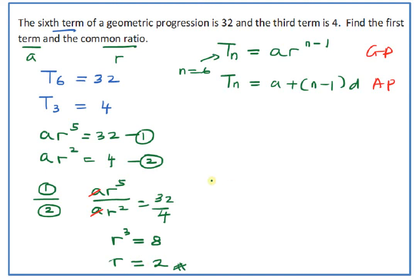Substitute r into the second equation. You have A·r^2, so A times 2 squared equals 4, so A equals 1.